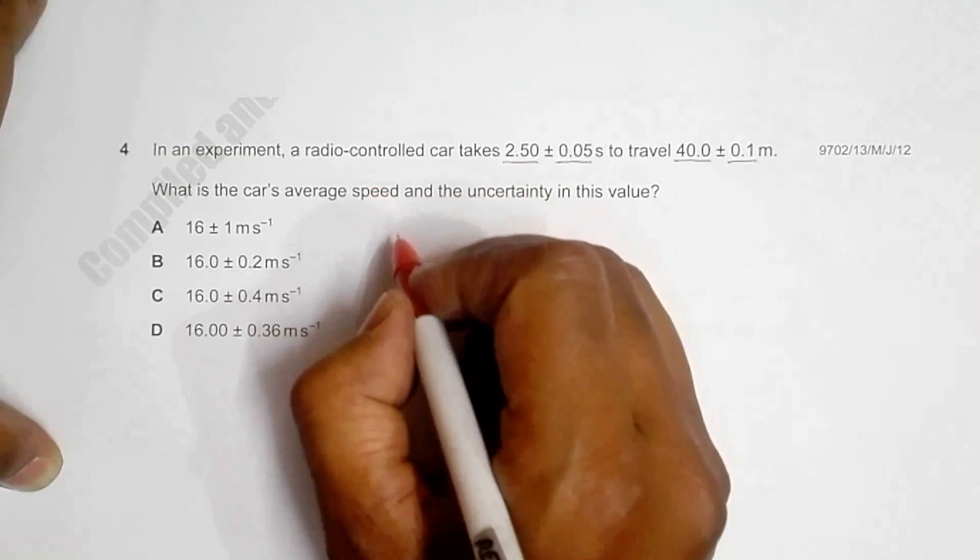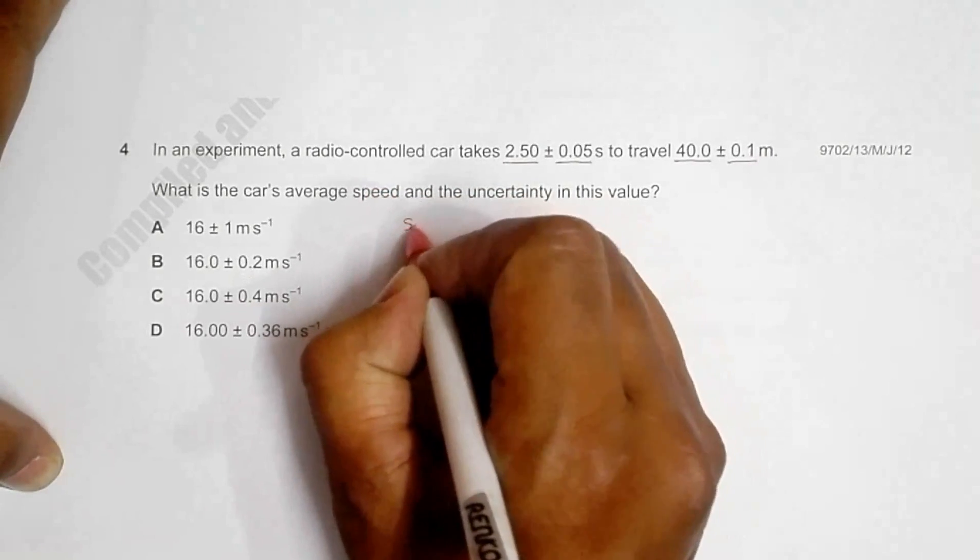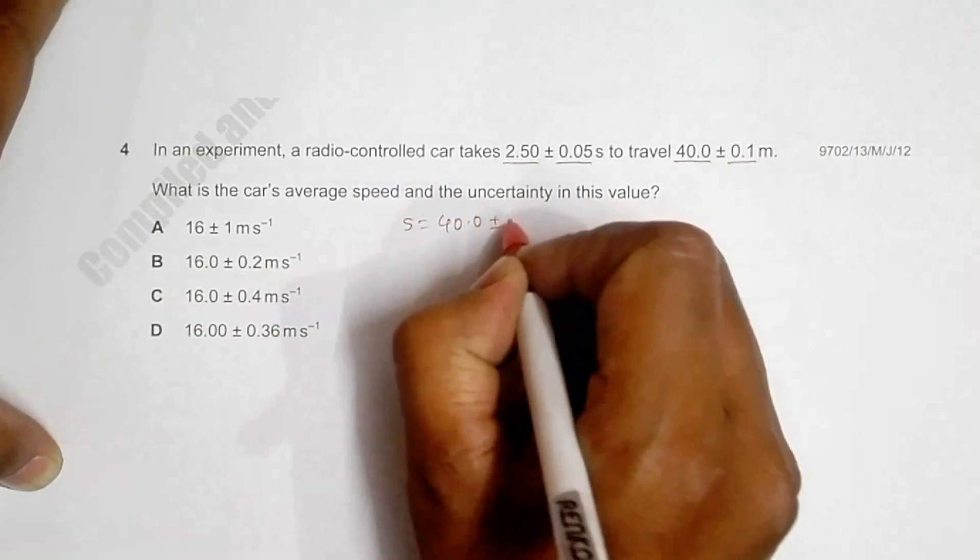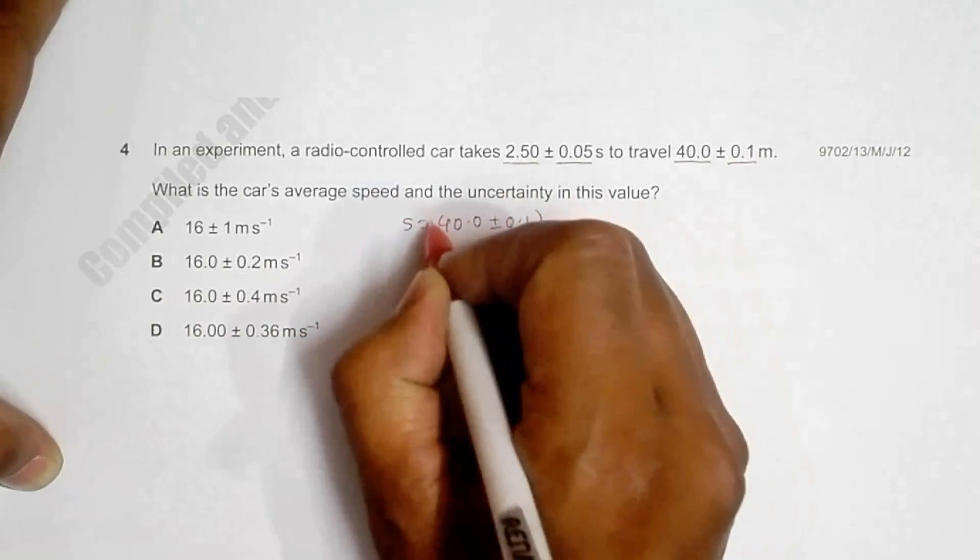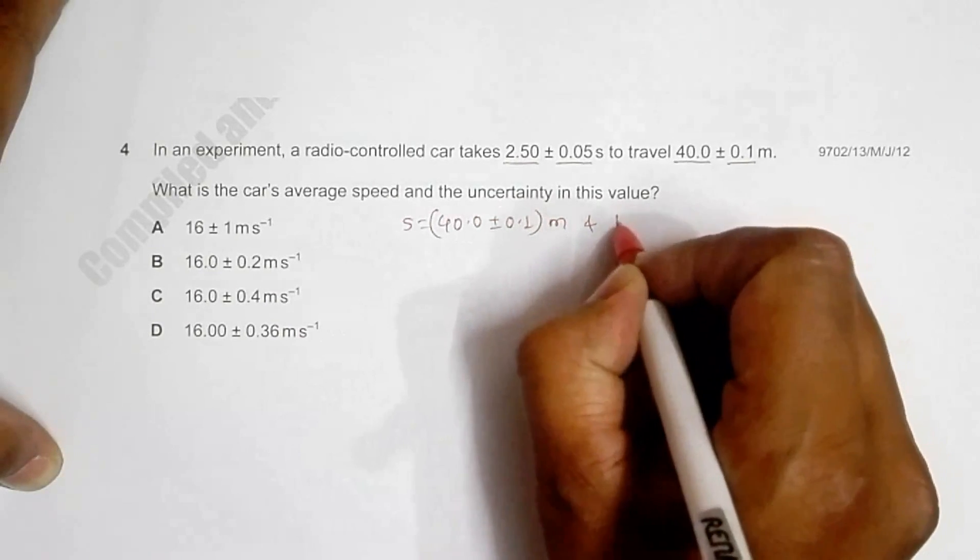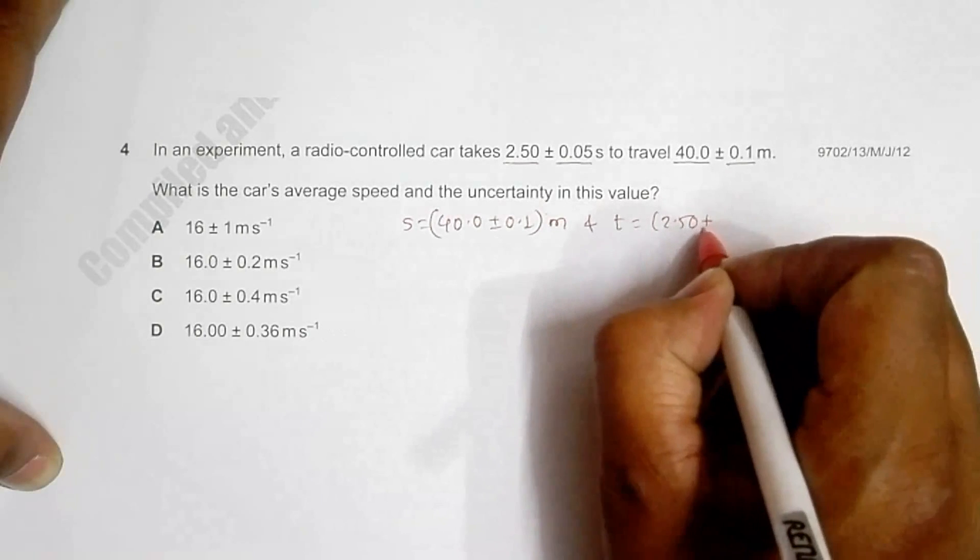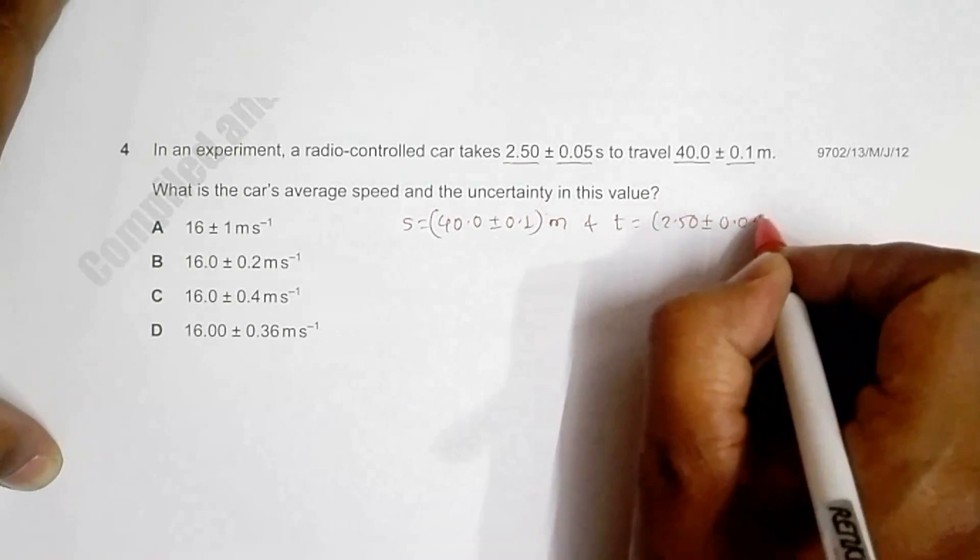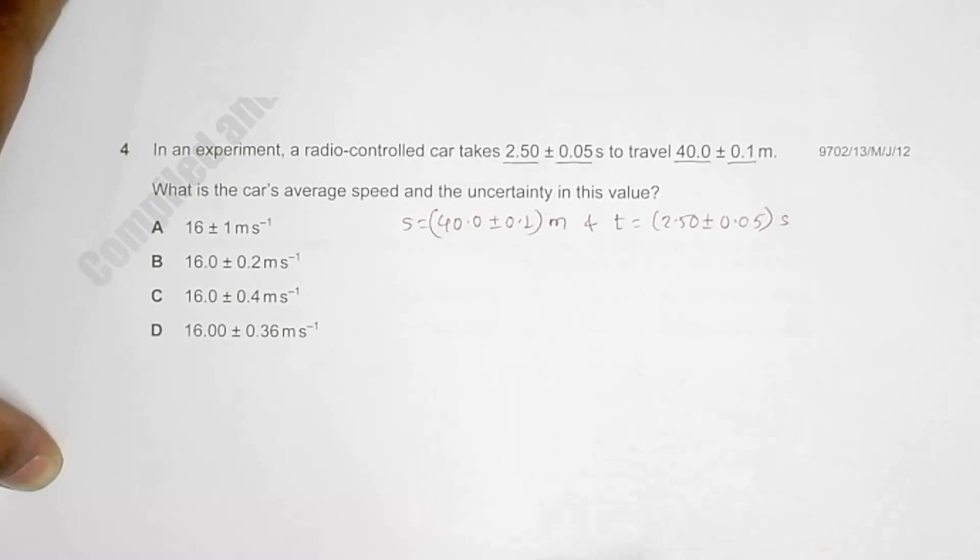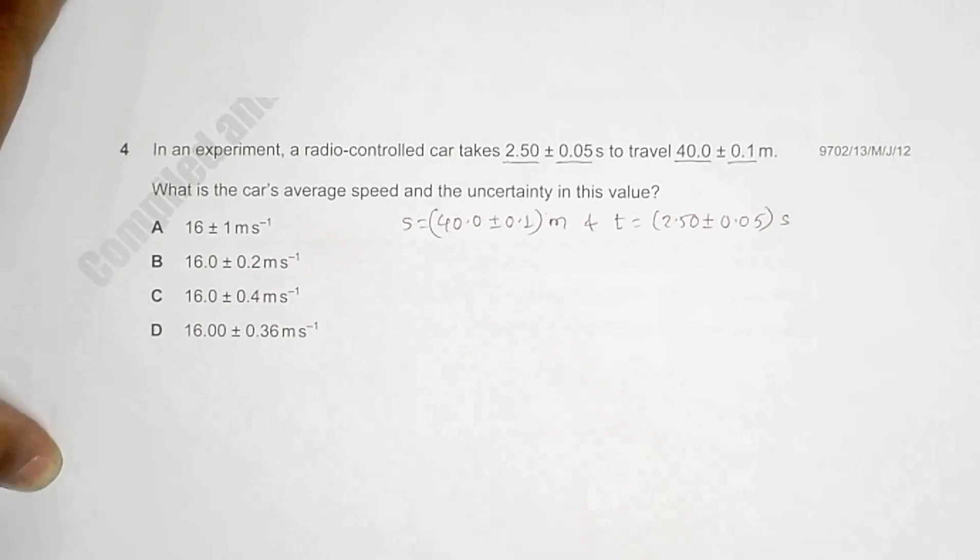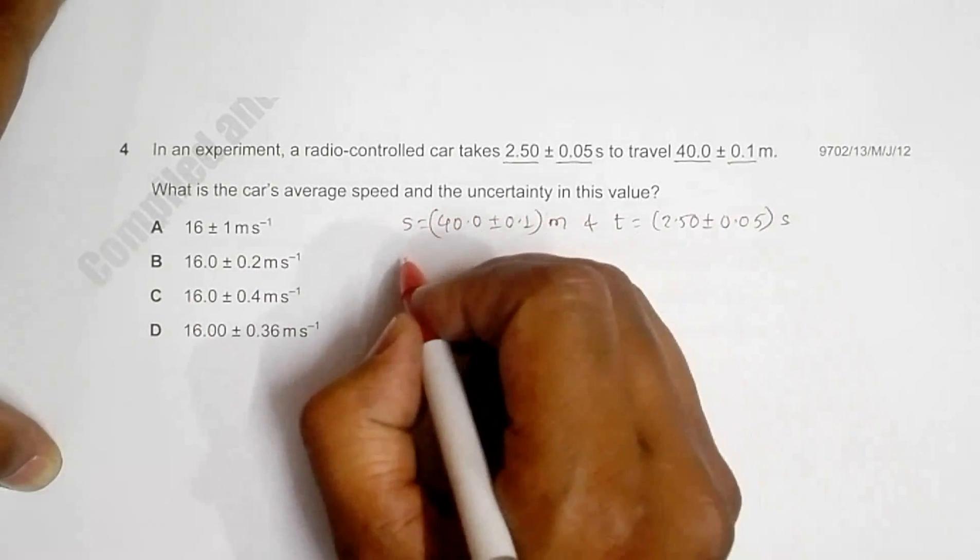So here we have s = 40.0 ± 0.1 meters and t = 2.50 ± 0.05 seconds. We have to find the average speed with its uncertainty.